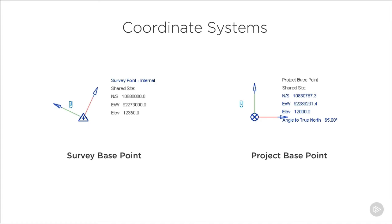The first thing I want to do is locate the project in the real world. We have an outline architectural model which already has this information defined for us. Revit has two coordinate systems that we need to understand, and each one has its own base point. Firstly we have the survey base point, which represents a known position in the real world such as a geodetic survey marker.